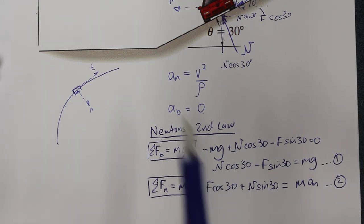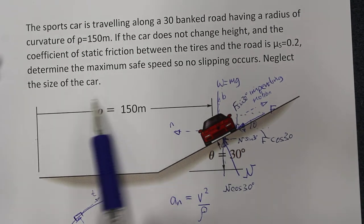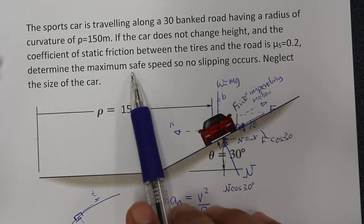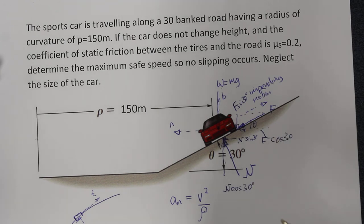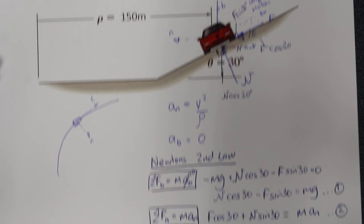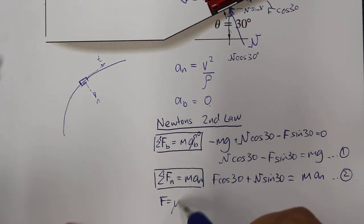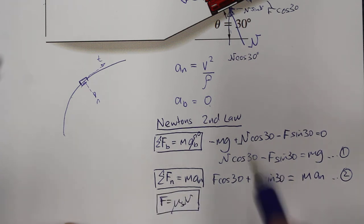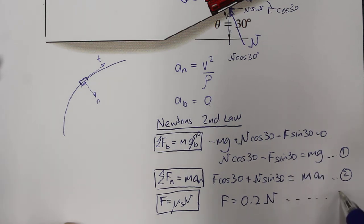At the maximum speed, the friction force equals the maximum friction available from the system: F = μs·N. So we can write F = 0.2N. We'll call that equation number three.